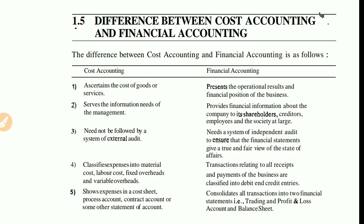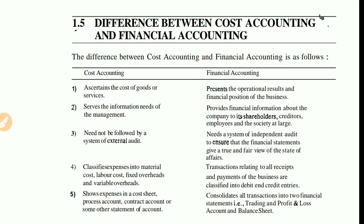The third difference: cost accounting need not follow a system of external audit, whereas financial accounting requires an independent audit to ensure that financial statements give a true and fair view of the state of affairs — to check whether there is any fraud or error in the organization's activities.